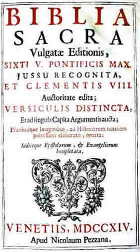The Clementine Vulgate was criticised by such textual critics as Richard Bentley, John Wordsworth, Henry Julian White, Samuel Berger, and Peter Corson. Roger Grison, in the preface to the fourth edition of the Stuttgart Vulgate, asserts that the Clementine edition frequently deviates from the manuscript tradition for literary or doctrinal reasons, and offers only a faint reflection of the original Vulgate, as read in the Pandecta of the first millennium.